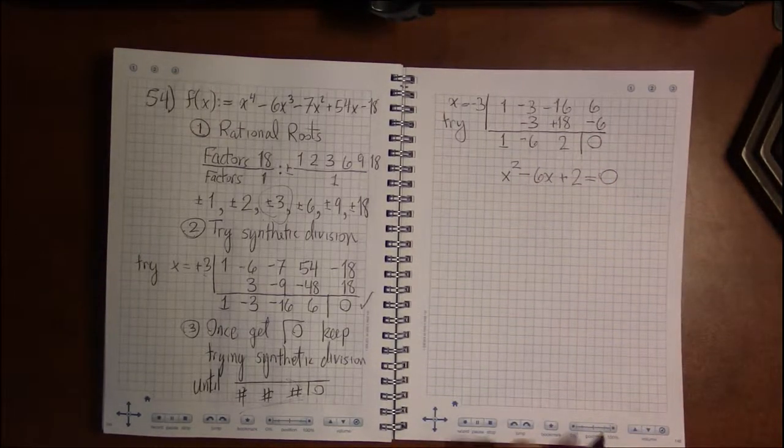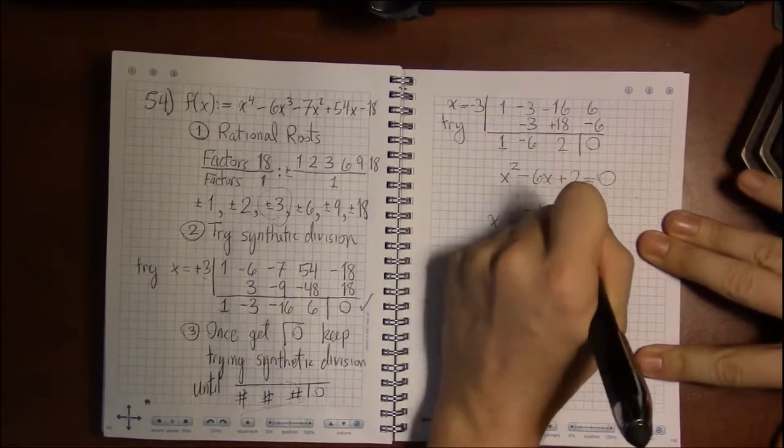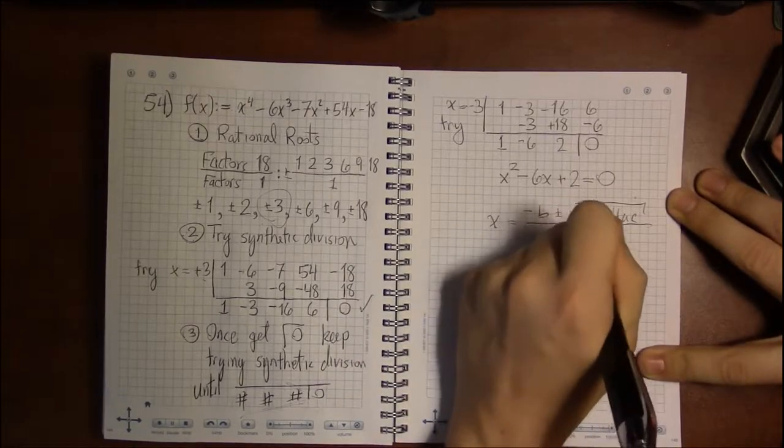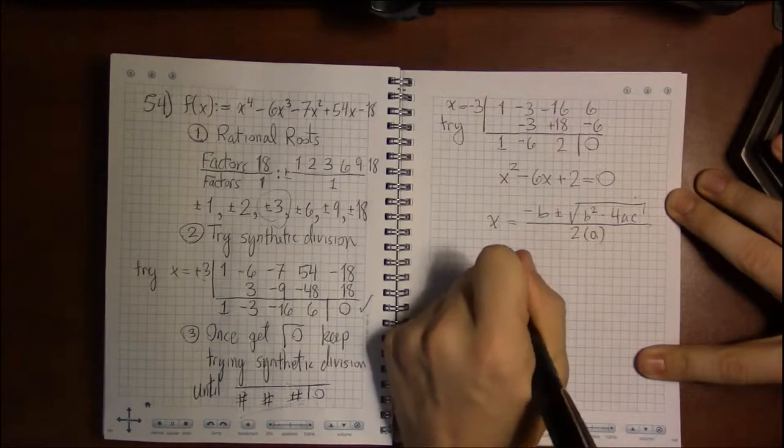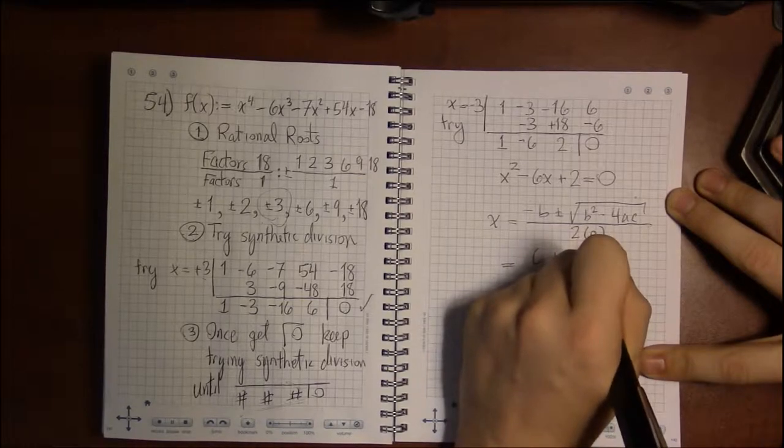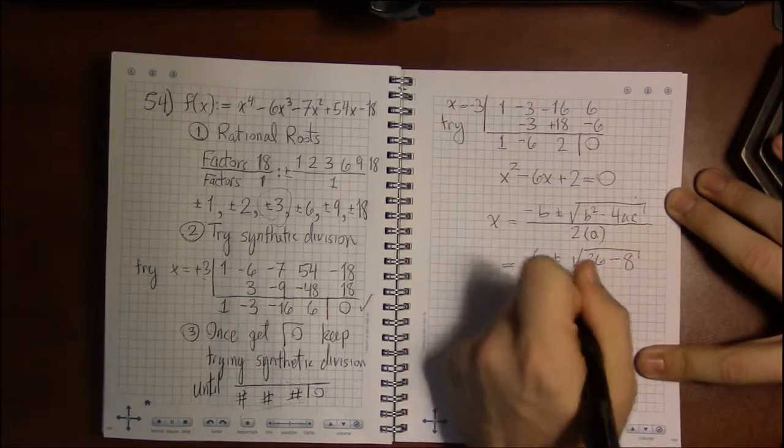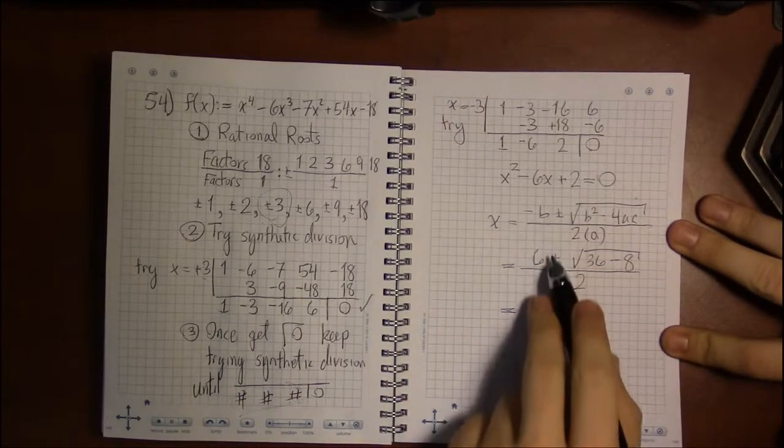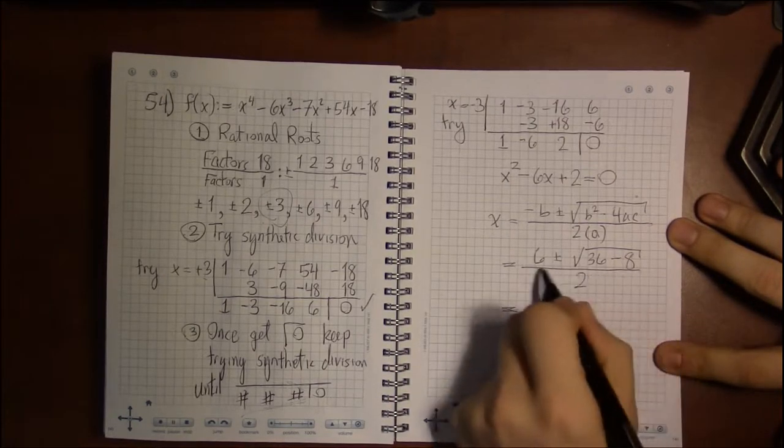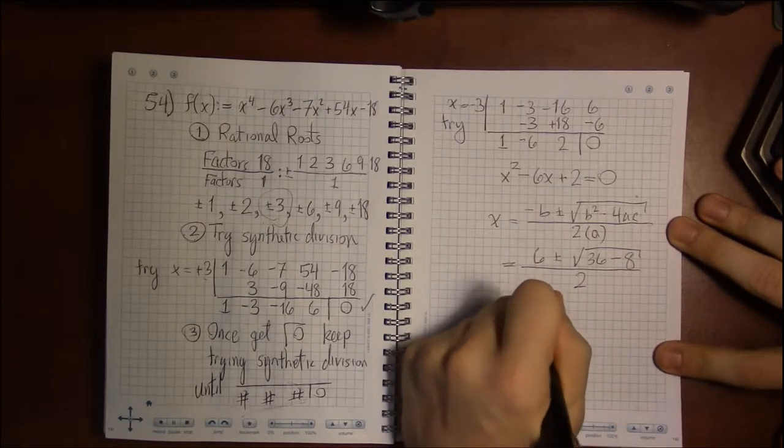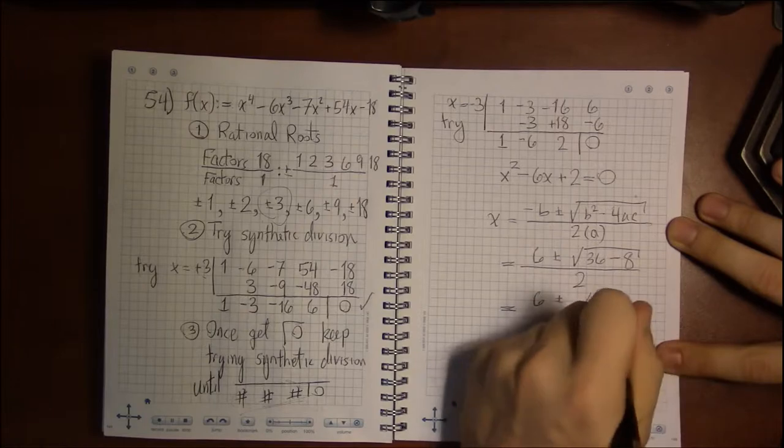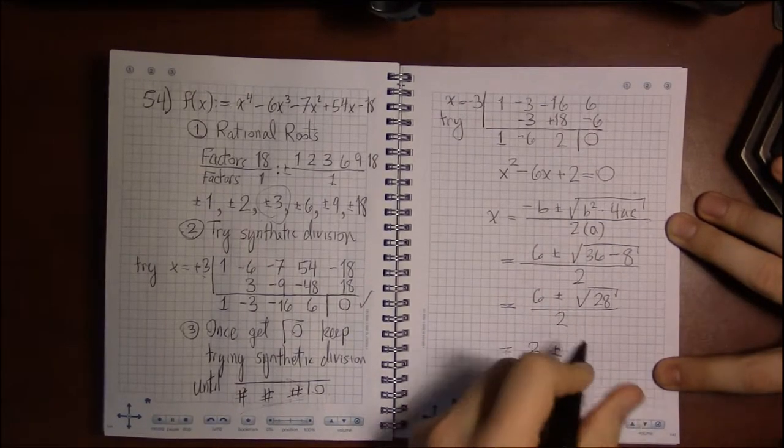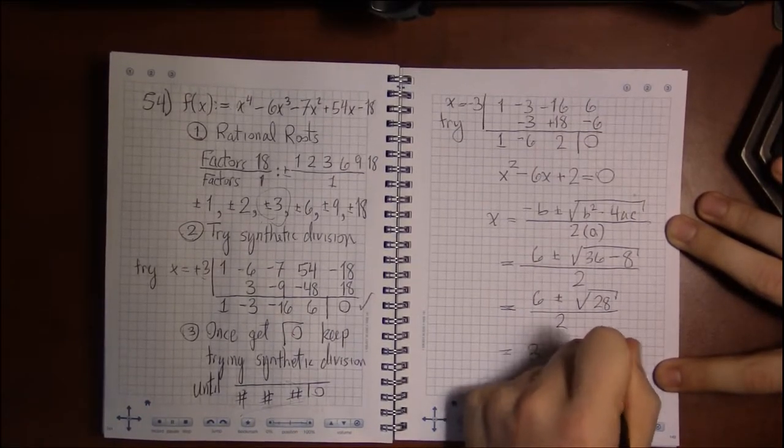And I'm going to solve this quadratic. In the interest of time, I'm going to do it relatively quickly. Using the quadratic formula, minus b plus or minus square root b squared minus 4ac. The roots of this quadratic will be the last two roots of the original polynomial. This is 6 plus or minus square root of 36 minus 8. Forgive me, I am going through this rather fast. But the video is already long enough. But if you take your time, just kind of use these as guideposts to make sure your work matches mine.